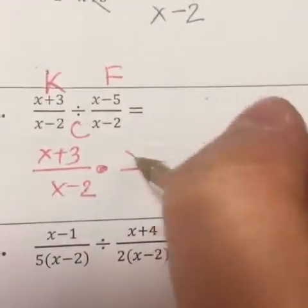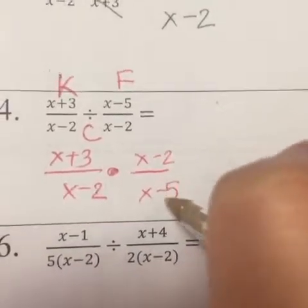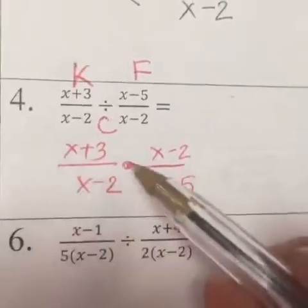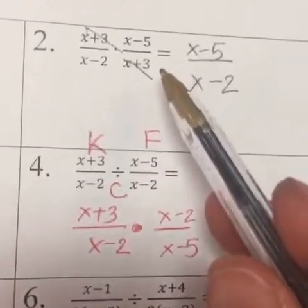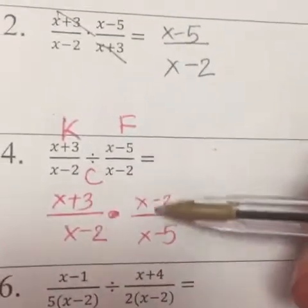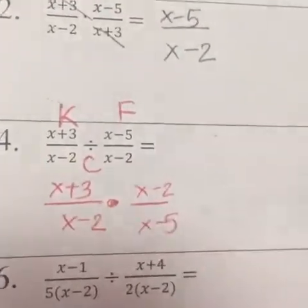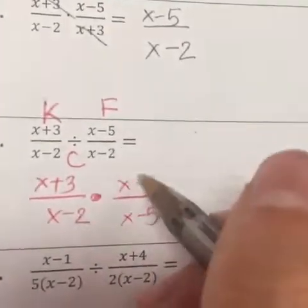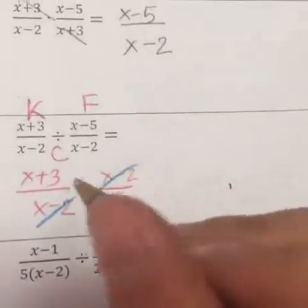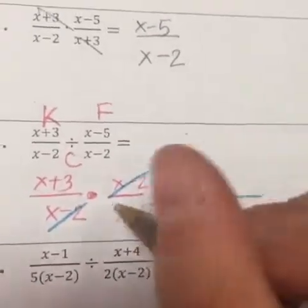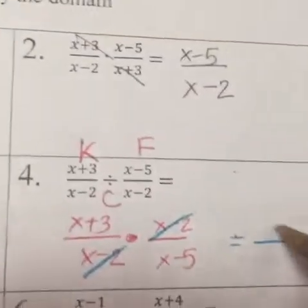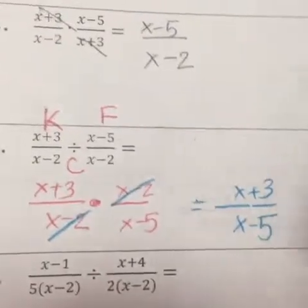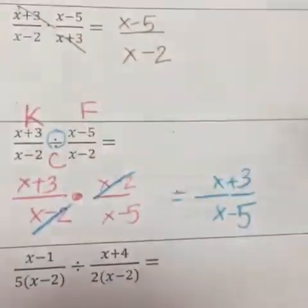So we flip the second fraction to get x minus two over x minus five. Now that it's flipped and the sign is changed to multiply, we look at the top and bottom to see what's the same. I see x minus two on top and x minus two on the bottom, so we cross it out. Whatever is left over is our answer: x plus three on top and x minus five on the bottom.